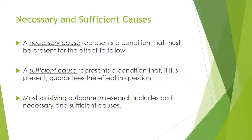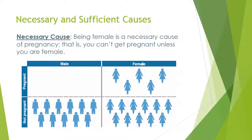A necessary cause represents a condition that must be present for the effect to follow. A sufficient cause represents a condition that, if present, guarantees the effect in question. Most satisfying outcomes in research include both necessary and sufficient causes. For example, being female is a necessary cause of pregnancy — you cannot get pregnant unless you are female. There are four categories: male/pregnant, female/pregnant, male/not pregnant, female/not pregnant. In order to be pregnant, you have to be female. That is a necessary cause.